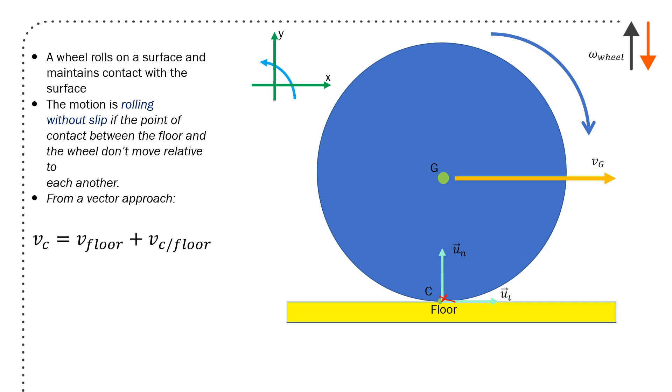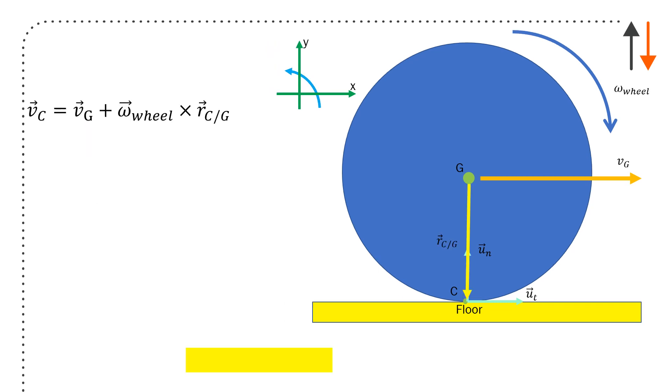Velocity of the point of contact c right there is going to be the velocity of floor plus velocity of contact with the floor with respect to the floor. If both are at the same velocity, velocity of c and velocity of floor are equivalent. Velocity of c with respect to the floor equals zero. Velocity of c equals velocity of the floor, and both are equal to zero. Velocity of c is just going to be velocity of g plus omega of the wheel cross rc with respect to g. That's your standard expression for relative velocity. Velocity c equals velocity of g plus velocity c relative to g.